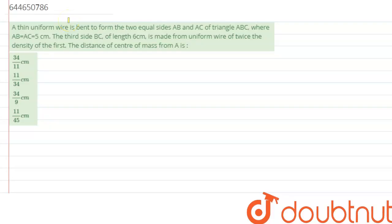Hello everyone, so we are given with a question which says a thin uniform wire is bent to form two equal sides AB and AC of a triangle ABC where AB and AC is given to be 5 cm. The third side BC of length 6 cm is made from a uniform wire of twice the density of the first. So the distance of the center of mass from A is.